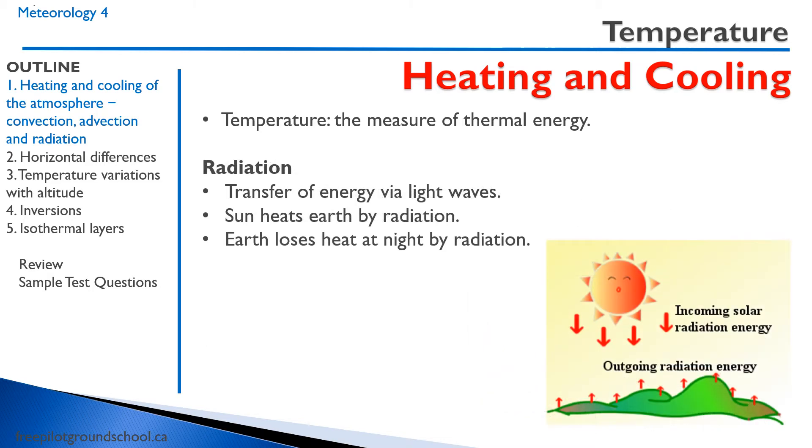Lastly, we have radiation. Radiation is the transfer of energy via light wave. The sun heats the earth by radiation. The earth loses heat at night by radiation. We can talk at length about this, with photons and black body radiation and all sorts of fancy physics things, but for the purpose of our ground school, it's pretty simple. The sun heats the earth via electromagnetic radiation and the earth loses the heat because it goes out into the atmosphere.